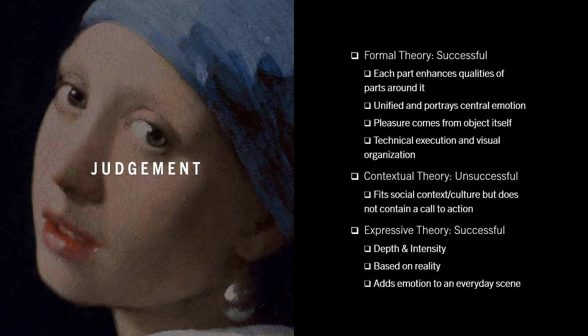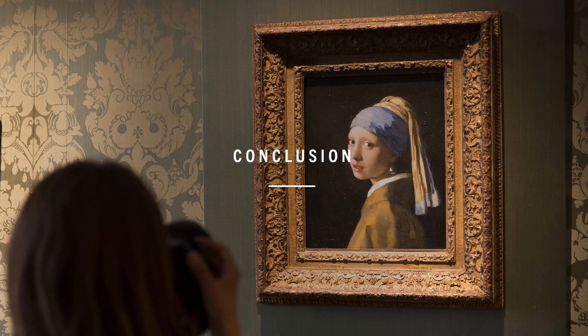The expressive theory stresses the value of communication of ideas and feelings in a work. Girl with a Pearl Earring can be considered successful under this theory. The work holds a depth and intensity that draws the viewer in, leaving some standing before the painting for hours just to enjoy the mysterious emotion created by the piece. This painting is based on reality and is able to make an everyday portrait extremely compelling. The viewer inevitably feels an emotion upon considering this painting, which is the primary goal of a successful work under the expressive theory.